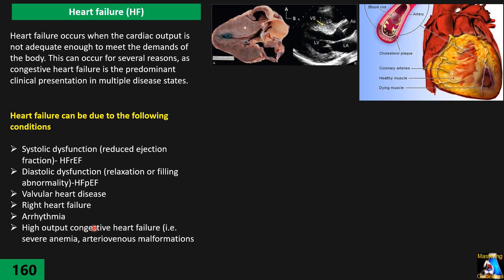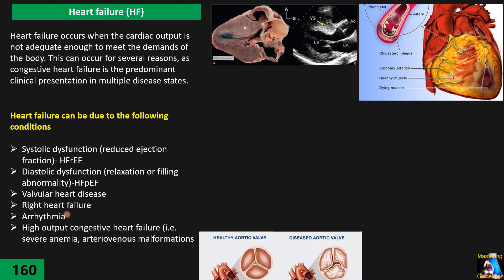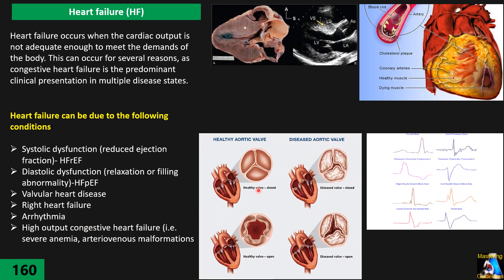The next one is cardiomyopathy due to arrhythmia — we will talk about that type of cardiomyopathy later. And the last group are those situations where cardiac output is high but we still have heart failure. At the top of them are severe anemia, arteriovenous malformation, and endocrine diseases such as thyrotoxicosis and so on.